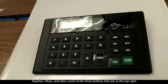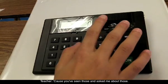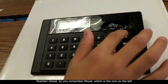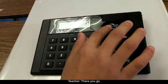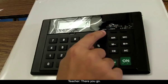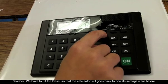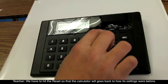Take a look at the three buttons at the top right, because you've seen those and asked about them. You remember reset, which is the one on the left. When we have to replace the battery, we hit the reset so the calculator goes back to how its settings were before.